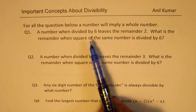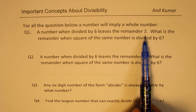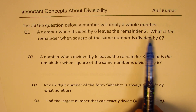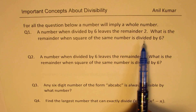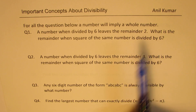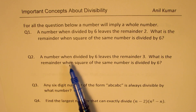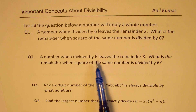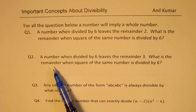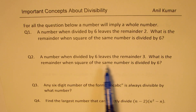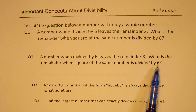Question number 1: a number when divided by 6 leaves the remainder 2. What is the remainder when the square of the same number is divided by 6? Question number 2: a number when divided by 6 leaves the remainder 3. What is the remainder when the square of the same number is divided by 6?